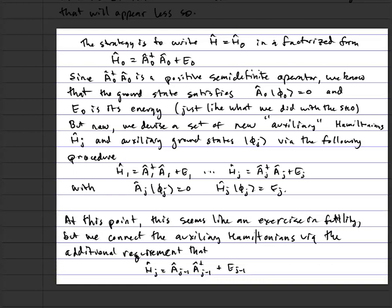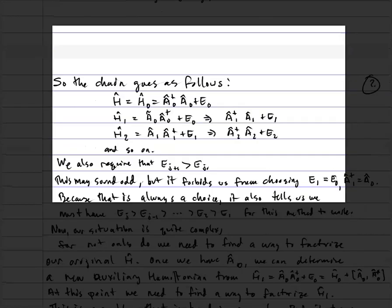At this point it may seem like an exercise in futility, because I didn't tell you how to construct the hᵢ's with i bigger than 1. We do it from the requirement: hⱼ equals aⱼ₋₁ aⱼ₋₁† plus eⱼ₋₁, which means h₁ equals a₀ a₀† plus e₀. I know a₀ and e₀ from my first factorization, so I can construct h₁. The auxiliary Hamiltonian h₁ will have a different potential than h₀, and I have to figure out how to factorize that new Hamiltonian as a₁†a₁ plus e₁. By proceeding in turn, that is how we make this procedure work.